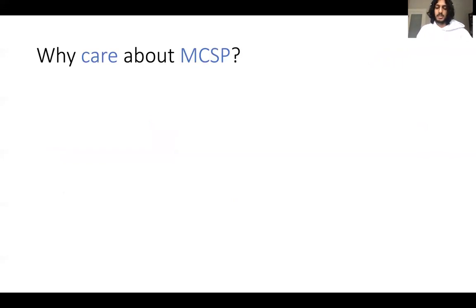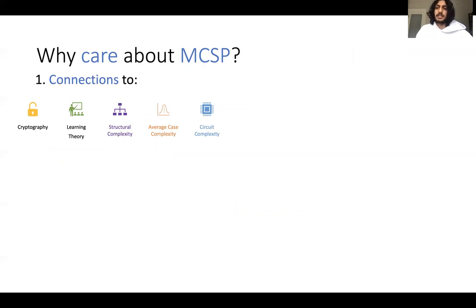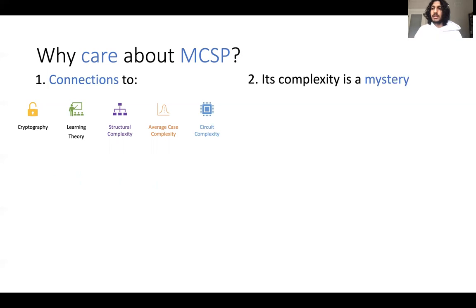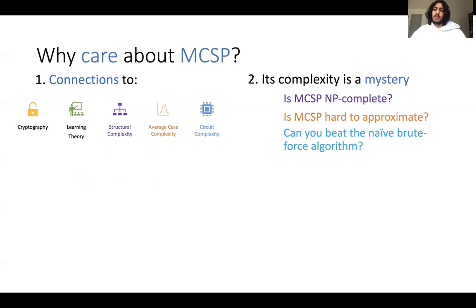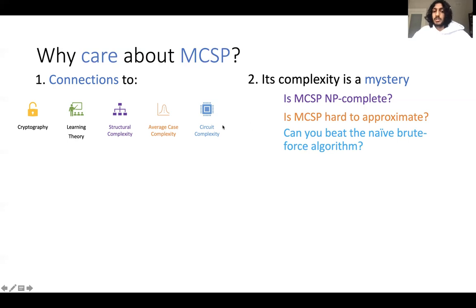I want to say a little bit about why people care about MCSP. The primary reason is the connections the problem has to other areas like cryptography, learning theory, and average-case complexity. What's interesting is that these connections relate to basic aspects of MCSP's complexity. Is the problem NP-complete? We don't know. Is it hard to approximate? We don't know. Can you beat the naive brute-force algorithm? These are all very basic questions we don't know the answer to.